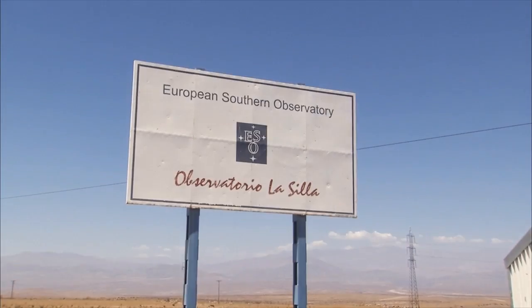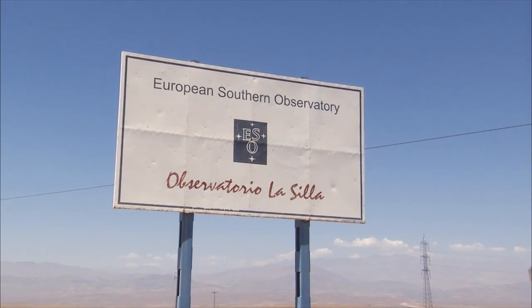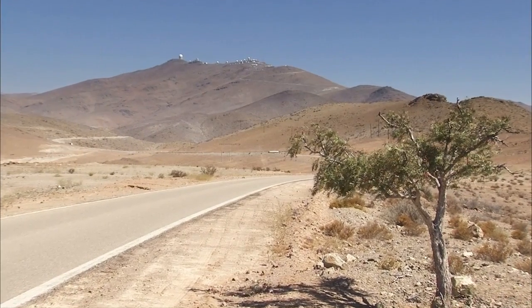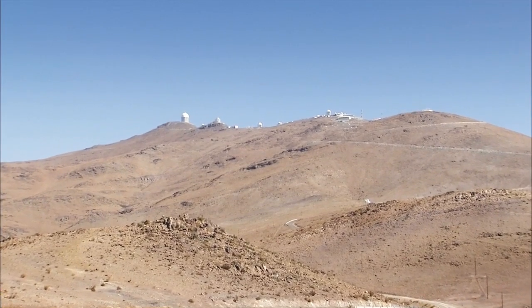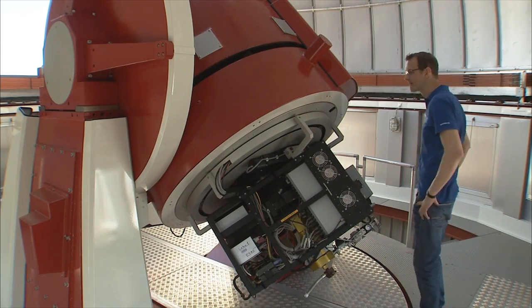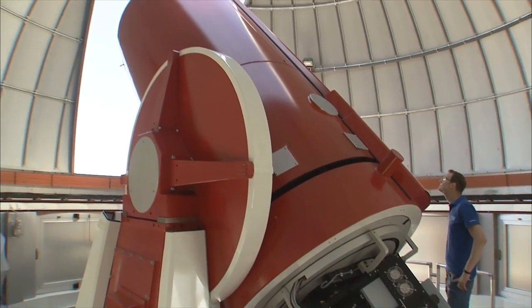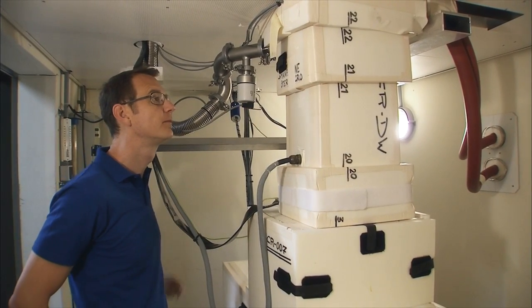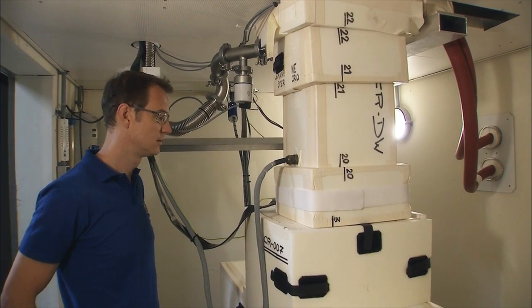The European Southern Observatory plays an important role in the search for exoplanets. Michel Mayor's team found hundreds of them from Cerro La Silla, ESO's first Chilean foothold. Here's the Coralie spectrograph, mounted on the Swiss Leonard Euler Telescope. It measures the tiny wobbles of stars caused by the gravity of orbiting planets.